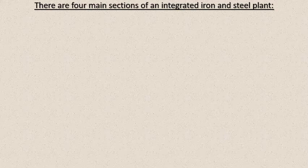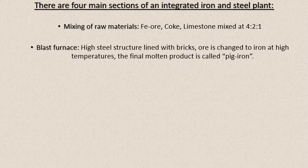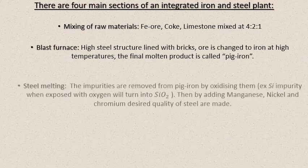There are four main sections of an integrated iron and steel plant. Number one: mixing of raw materials — iron ore, coke, and limestone are mixed at a ratio of 4:2:1, meaning four parts iron ore, two parts coke, and one part limestone. Number two: the blast furnace, which is a high steel structure lined with bricks where the ore is changed into iron at high temperatures. The final molten liquid product you get is called pig iron.